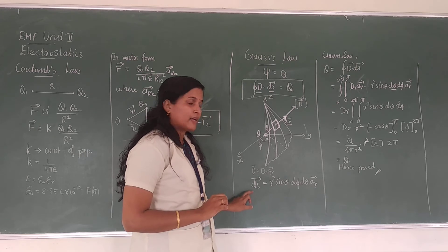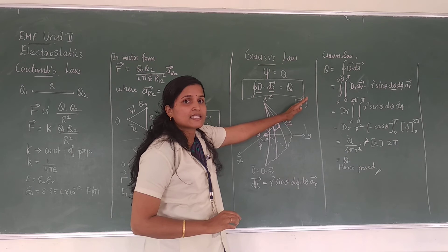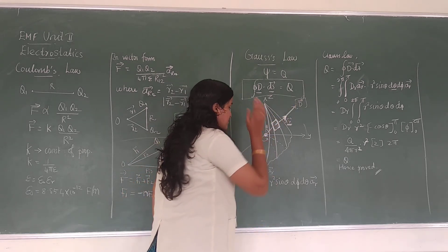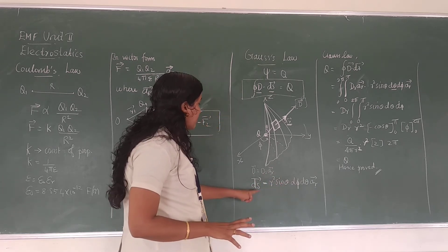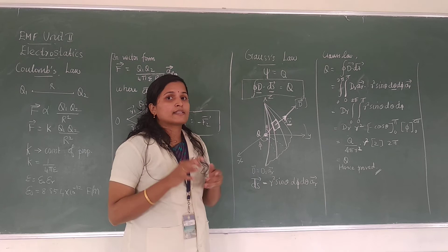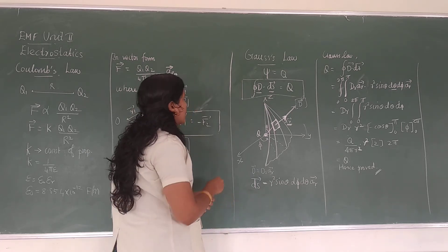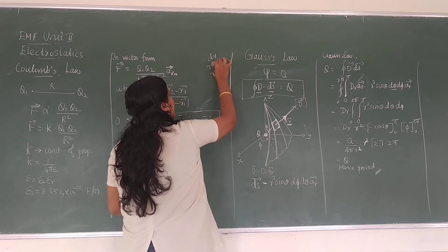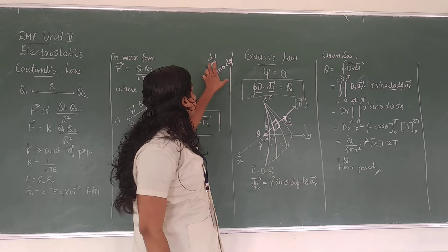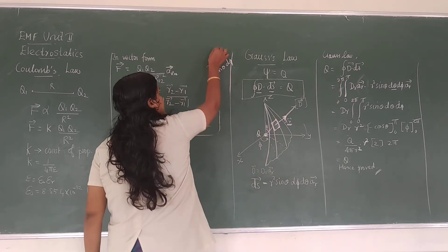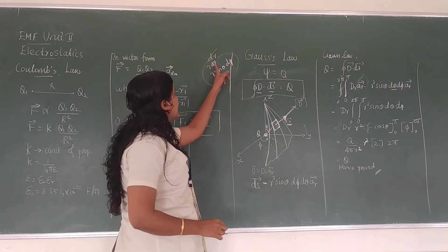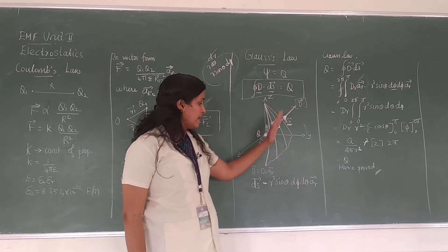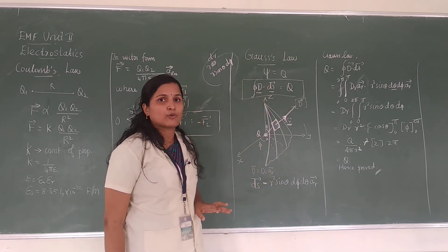From this diagram we write what D and Ds are. D is only along the A R direction with no component in any other direction, so D can be written as D R into A R. For Ds, recall the surface element in spherical coordinates: it has components D R, A R, D phi, and sine theta D theta. In the A R direction, we take R² sine theta D theta D phi times A R. We have now obtained D and Ds to substitute into the Gauss's law equation.